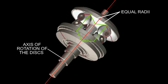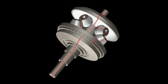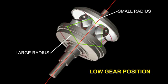When the rollers are steered so that they contact the input disc closer to its axis of rotation and the output disc further away from this axis, the CVT moves to a low gear position with the output moving slower than the input.